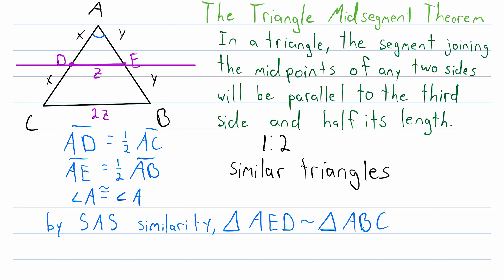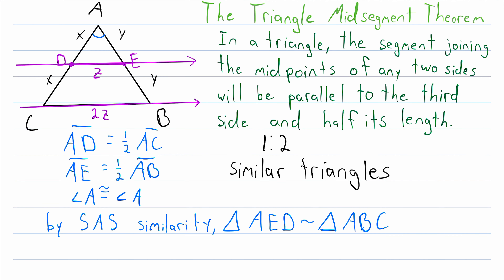We say that two line segments are parallel if the lines that contain those line segments are parallel. A reasonable thing to do would be to draw the two lines that contain the line segments we're concerned with. If you've worked with problems involving parallel lines, you might immediately notice that these two lines are being cut by a transversal. They're also being cut by another transversal, but we can focus on just one — let's focus on transversal AB. We see angle AED and angle ABC, which are corresponding angles. If we can prove that these angles are congruent, then by the converse of the corresponding angles theorem, we will have proved that these two lines are parallel.